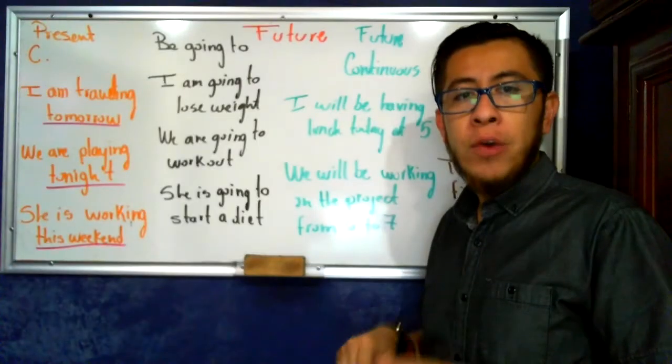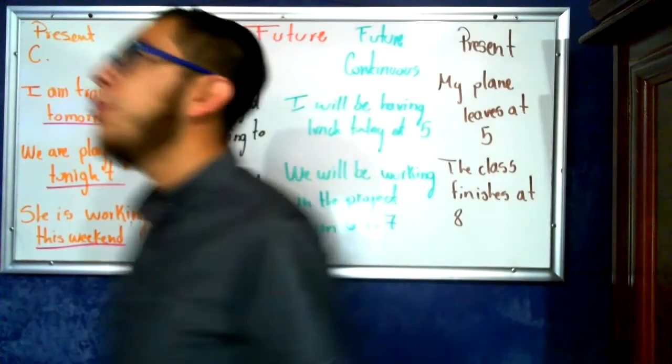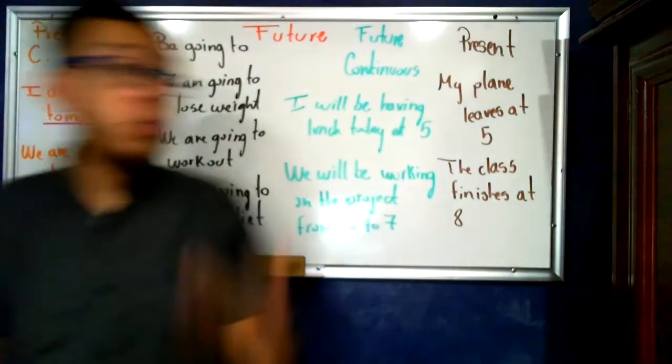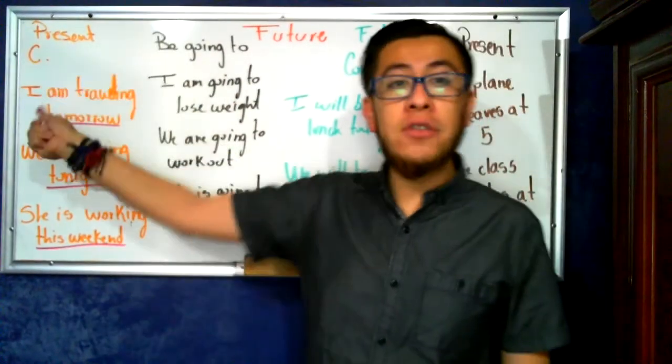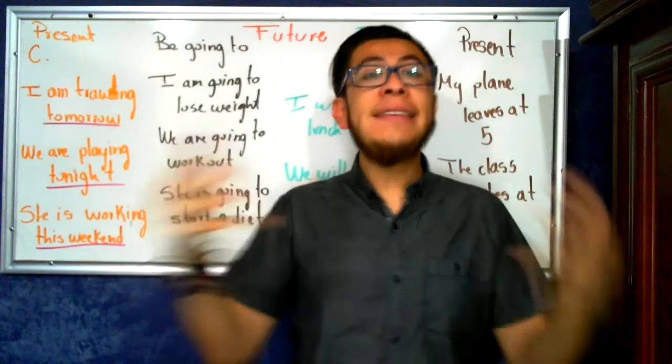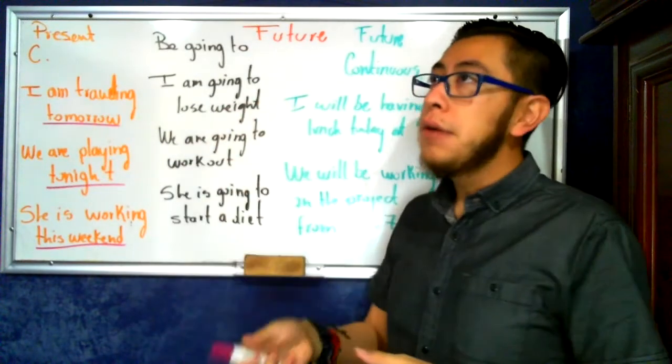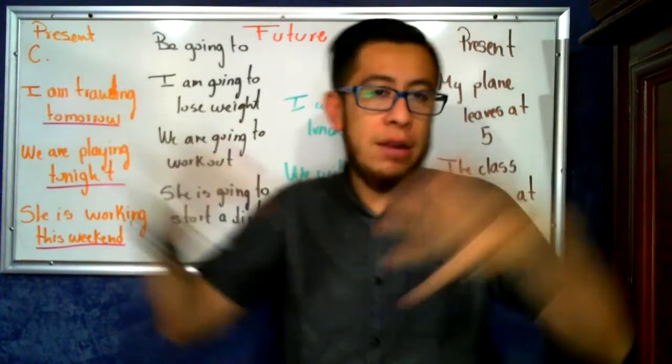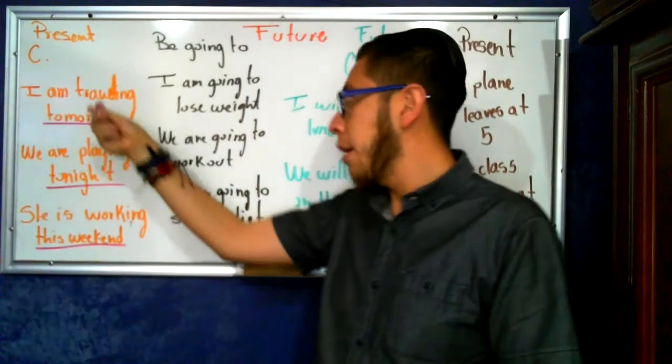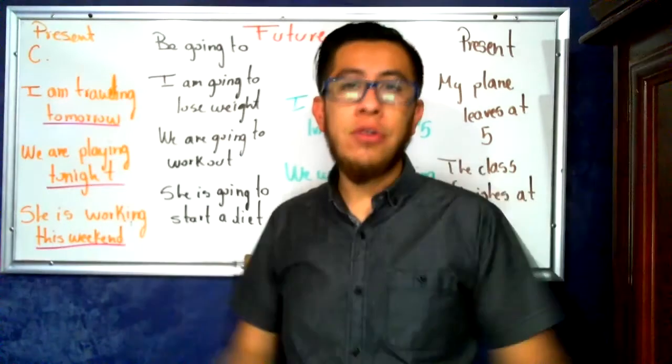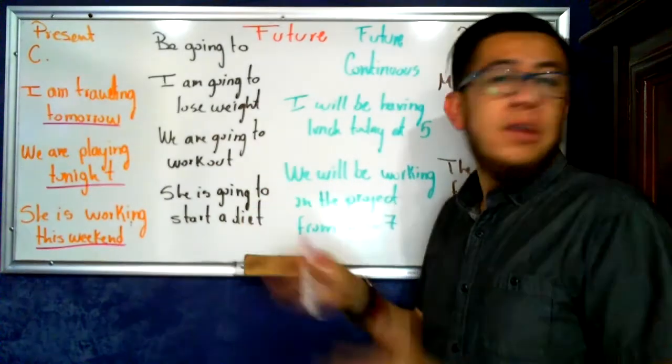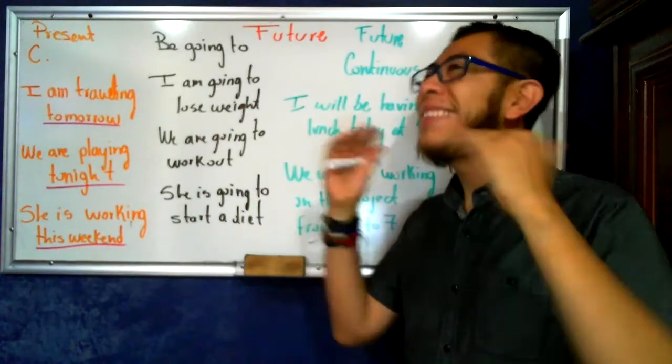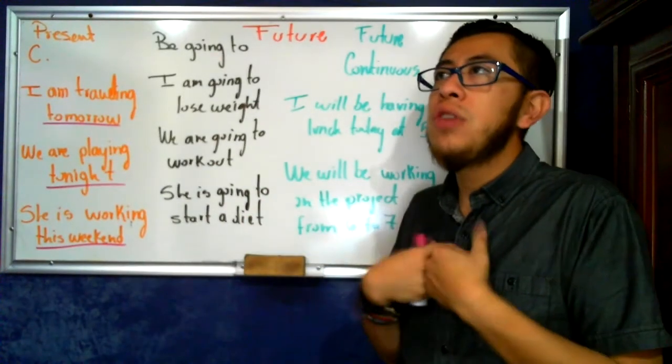We are going to work out. We're going to finally go to the gym now. That would be another possible intention. It's not certain, but it's an intention I have. I want to do it. In short, present continuous is I'm going to do it. That's it. There's no other way. But be going to, well, there's no other way unless something extraordinary happens.